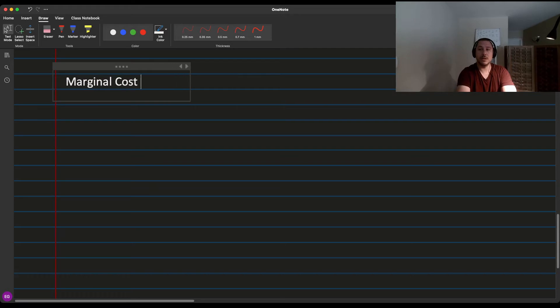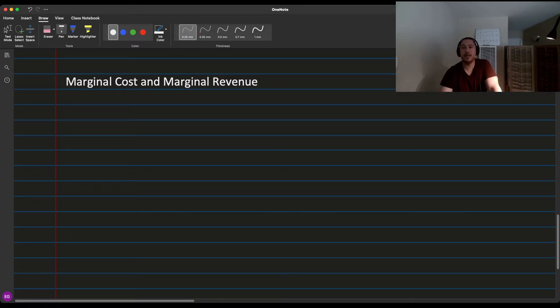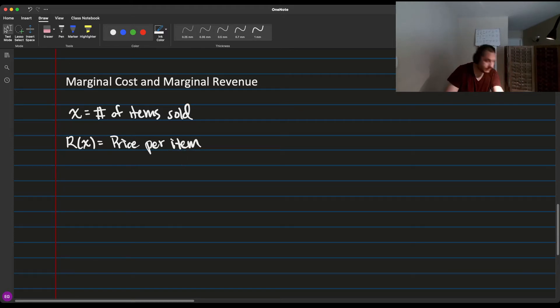So let's talk about marginal cost and marginal revenue. If you are selling items, let's say that X is the number of items sold, and R(X) is the total revenue from selling X items.